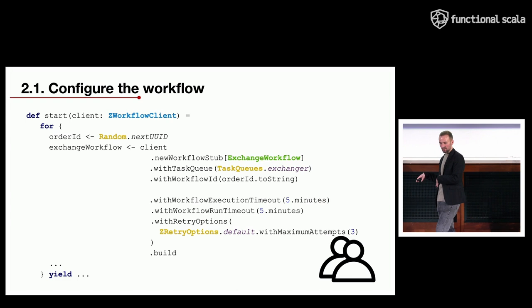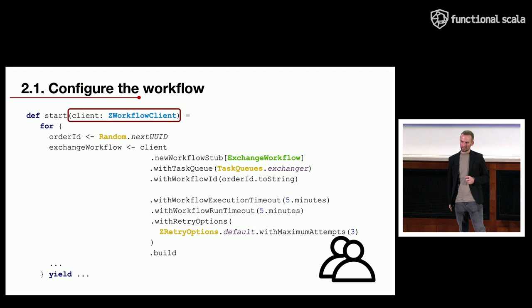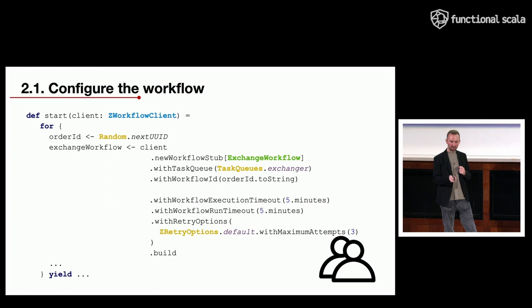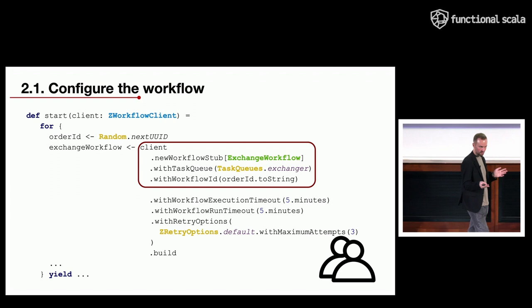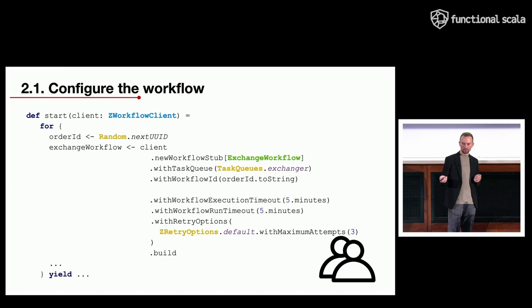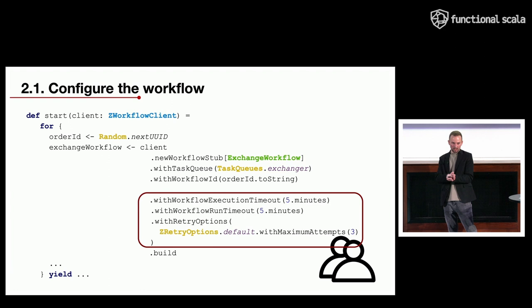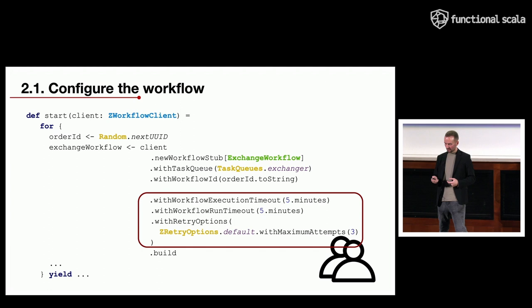On the client side, to start workflows the first thing you need is a workflow client which interacts with the Temporal cluster to schedule new workflows for execution. To create a running workflow, you specify the workflow interface describing the business process, specify the task queue and a unique ID for the workflow — which is basically the unique ID of our exchange order.